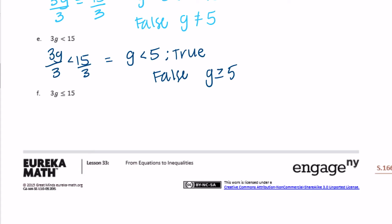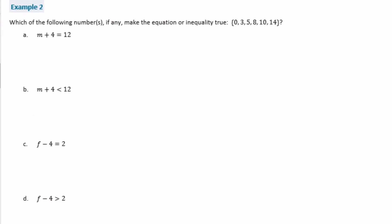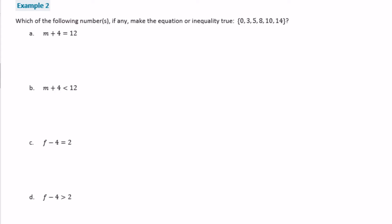Part f: 3g is less than or equal to 15. Dividing both sides by 3: g is less than or equal to 5 — that makes it true. The opposite, g is greater than 5, is when it would be false. So we're basically finding the solution and then finding its opposite to make it false. Let's move on to example 2.